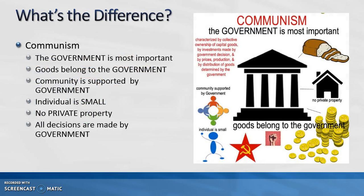In a communist system, the government is the most important. Goods and everything belong to the government. The community is supported by the government, the individual is small, and there is no private property or private ownership. All decisions are made by the government for the good of the community. That brings us to the end of the slideshow — if you have any questions, bring them to class. Thank you for watching.